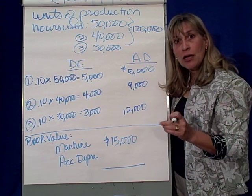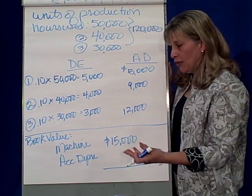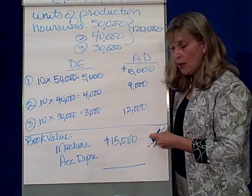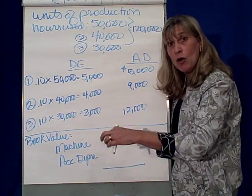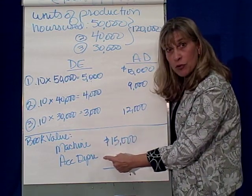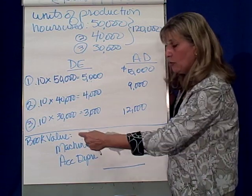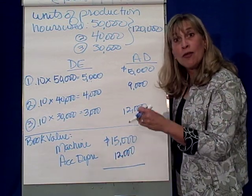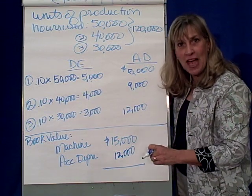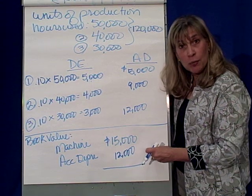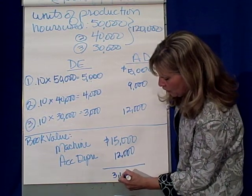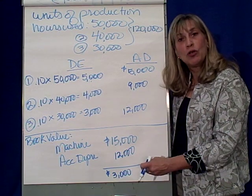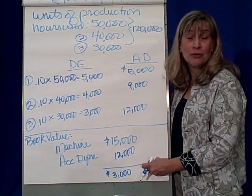At the end of the third year of life, even though we may continue to use it, notice the machine has a cost of $15,000. Its accumulated depreciation — which is the contra asset account to machine and shows its usage — now has a balance of $12,000. So the machine's book value, or net book value, is $15,000 cost less accumulated depreciation of $12,000, meaning it will stay on the books at the machine's residual or salvage value of $3,000 until it's sold or disposed of.